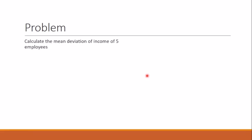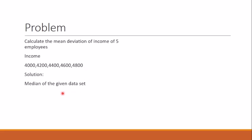To understand mean deviation, let's calculate it for the income of 5 employees: 4000, 4200, 4400, 4600, and 4800. The data is already in ascending order. First, find the average: the median of this dataset is 4400, so A = 4400.